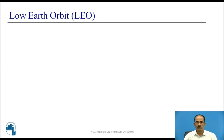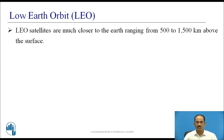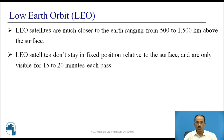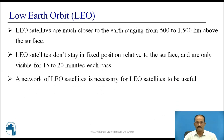Low Earth Orbit, also called LEO. LEO satellites are much closer to the earth, ranging from 500 to 1500 km above the earth's surface. LEO satellites do not stay in a fixed position relative to the surface and are only visible for 15 to 20 minutes each pass. LEO satellites revolve with very high speed — faster than the earth's speed — therefore the range of focusing on any particular place on the earth's surface is only 15 to 20 minutes per each satellite revolution. A network of LEO satellites is necessary for them to be useful.